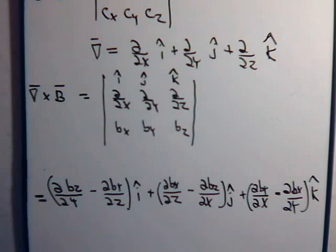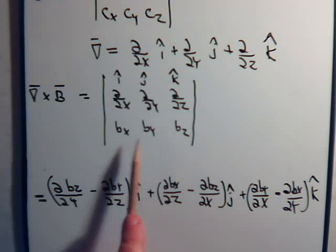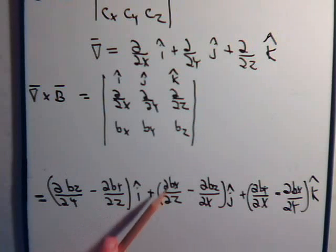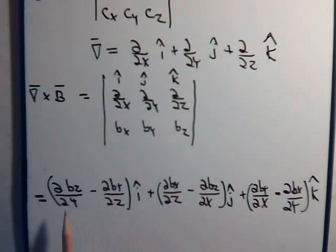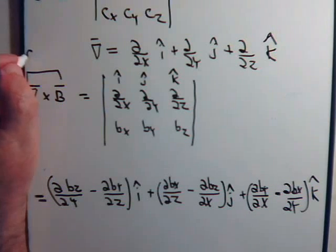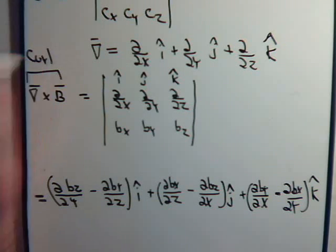So that is the cross product of the del operator with another vector. When we are in a vector field, B sub x, B sub y, and B sub z are continuously changing, so it makes sense to take their derivatives like this and get a real expression for this vector cross product. Not only is this a valid expression, but it has a lot of physical significance, as we'll see in later videos on our vector analysis series. This is what is called the curl of the vector.